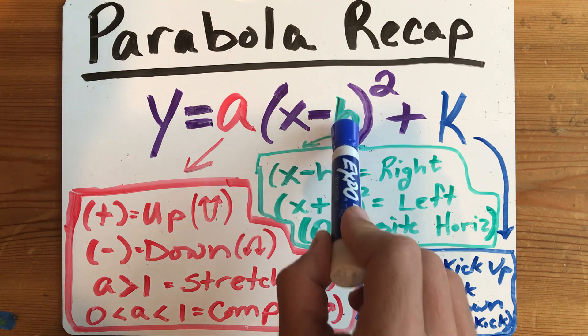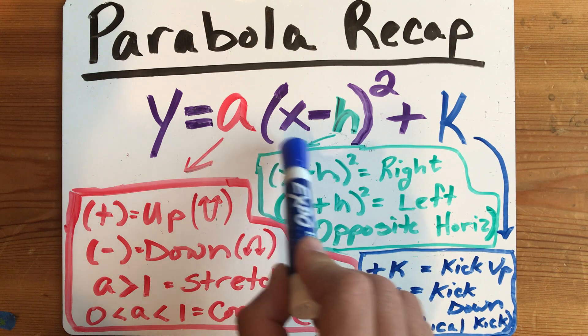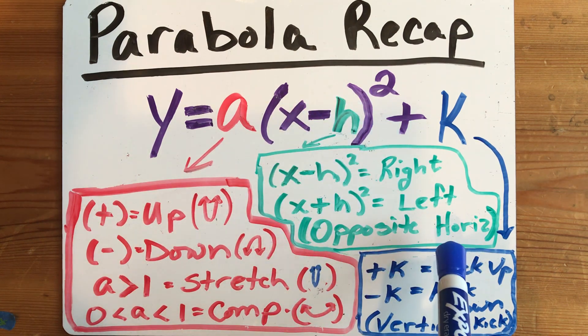And when you see x minus the number inside the parentheses, the graph goes to the right, and when it says x plus the number, the graph goes to the left. So you want to be thinking opposite the h value when you see it inside the parentheses here when you're shifting horizontal.